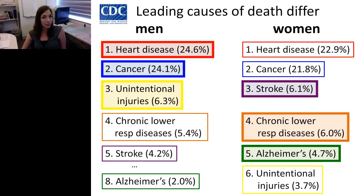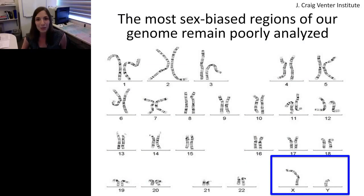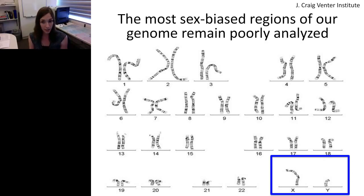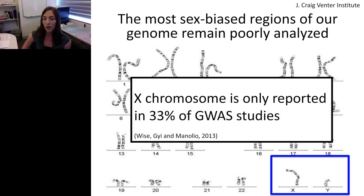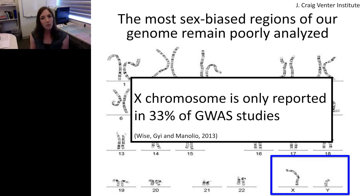What's striking is that many leading causes of death differ significantly between men and women. As a geneticist, the part of the genome that strikes me the most is the X and Y chromosome. Although all of us inherit one copy of each chromosome from our genetic mother and father, the sex chromosomes are not equally represented — genetic females have two copies of the X, and genetic males have one copy of X and one Y. Despite being so unique, the X and Y remain fairly poorly analyzed in genome-wide association studies — only about 33% of GWAS even report analyzing the X chromosome, and almost none include the Y chromosome.